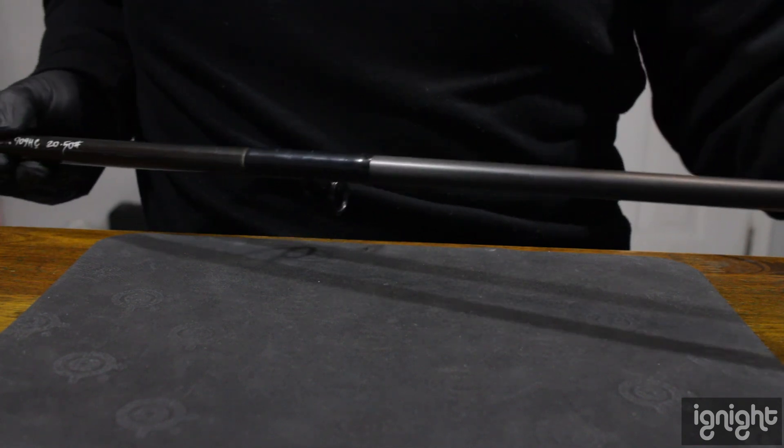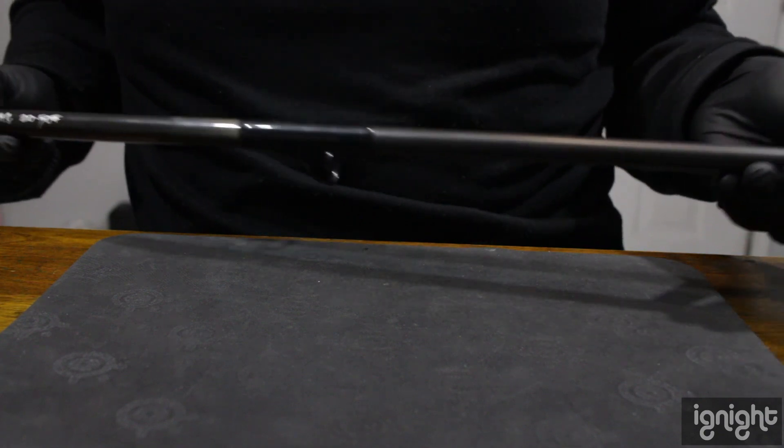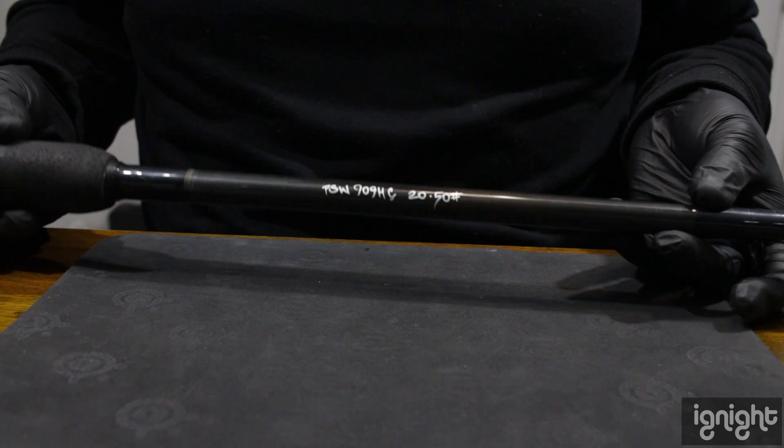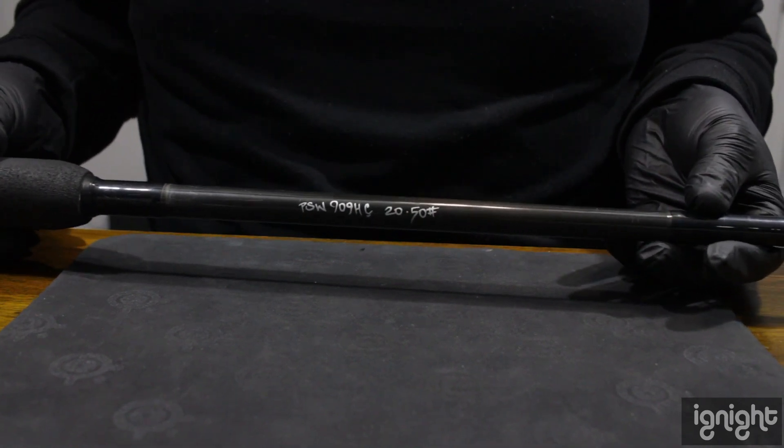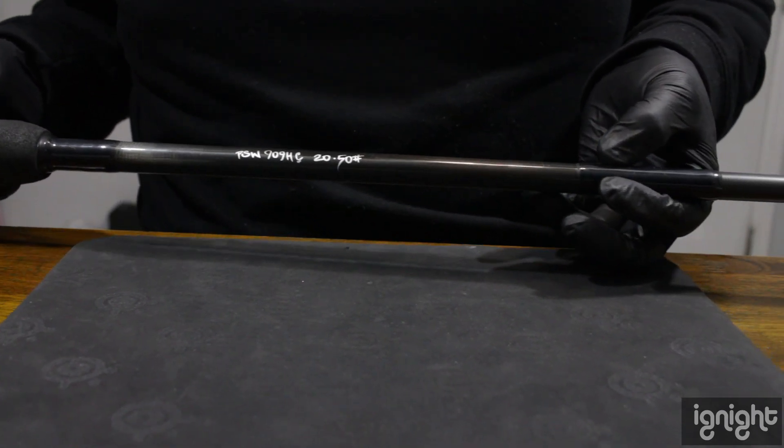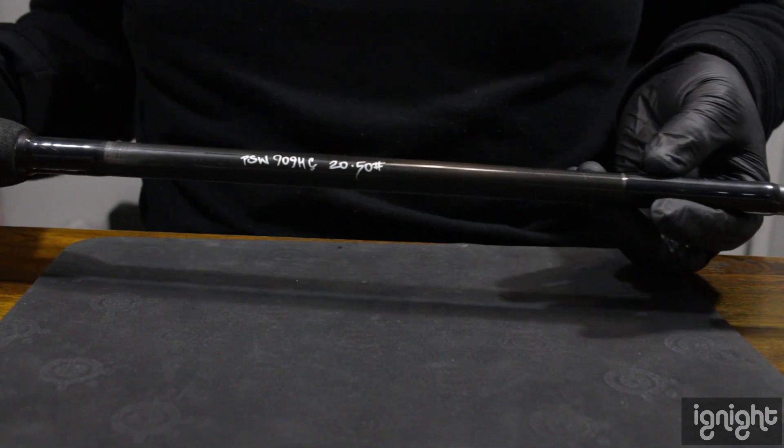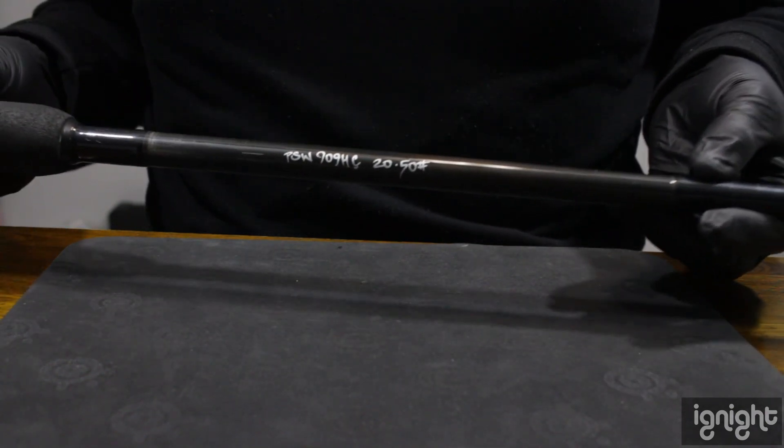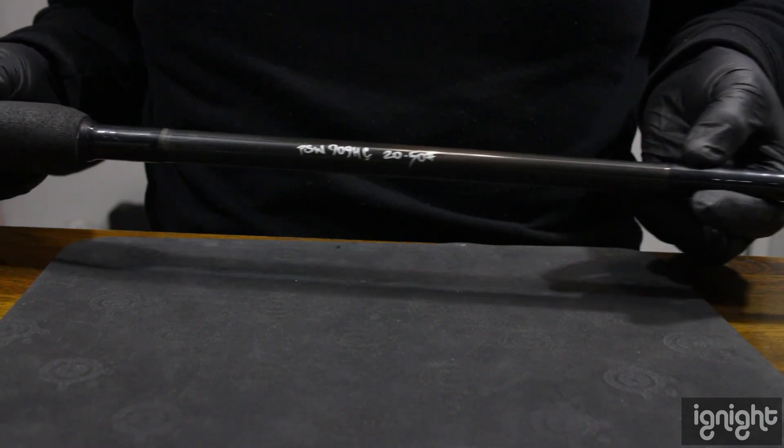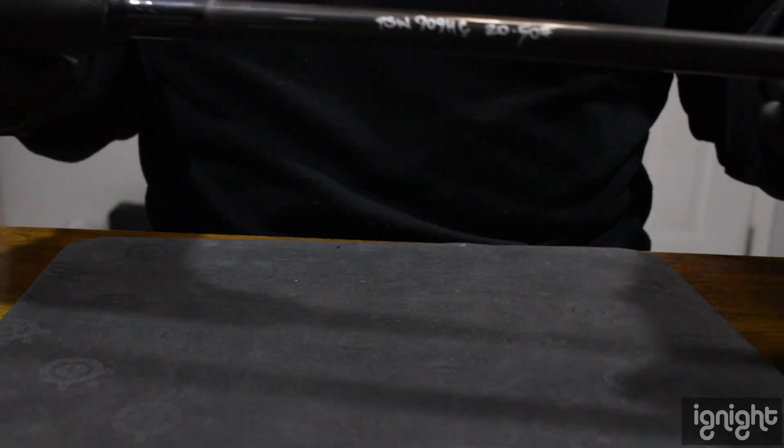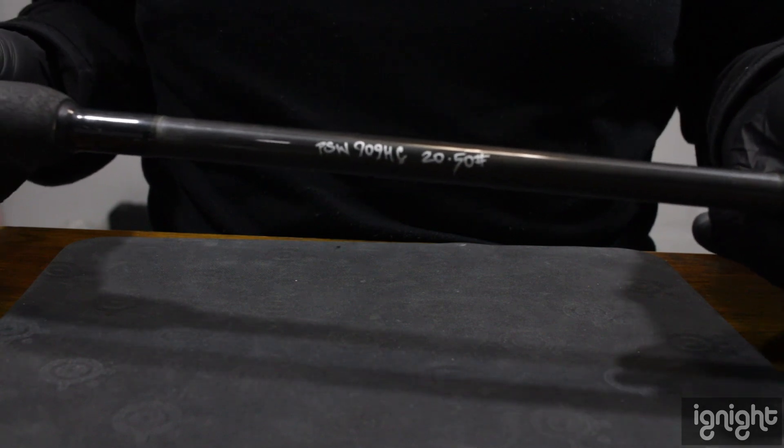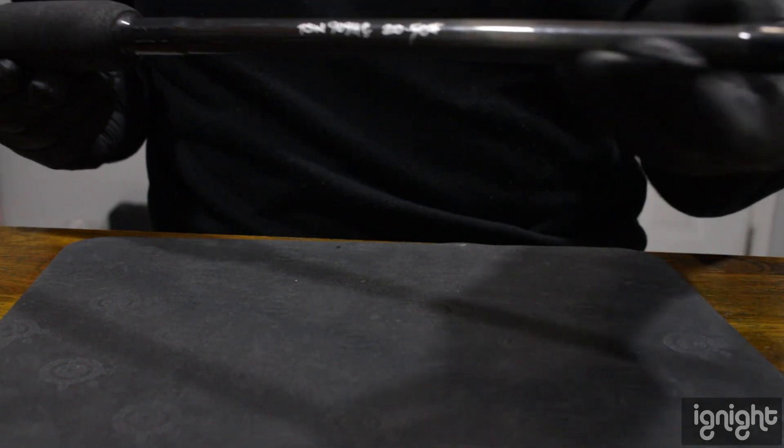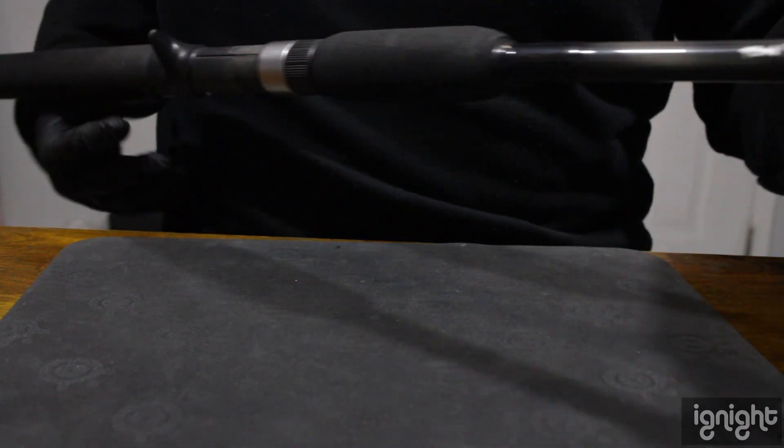This is actually a Phoenix, this is a Black Diamond. I had this rod custom made for me. As you can see the specs, if you want to google it: PSW 909 HC 20 to 50 online for the line that's needed for this, anywhere from 20 pound to 50 pound.